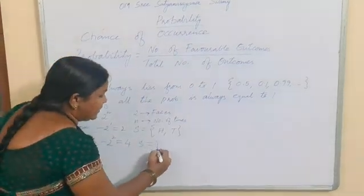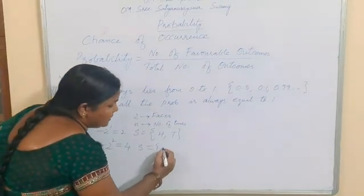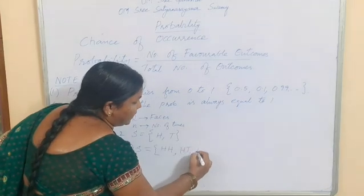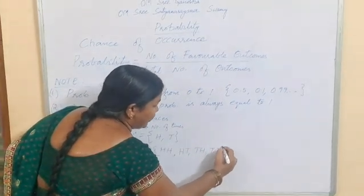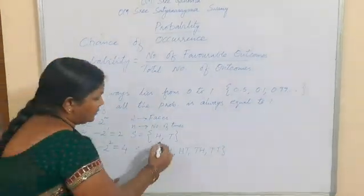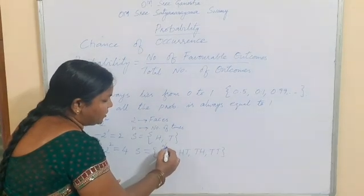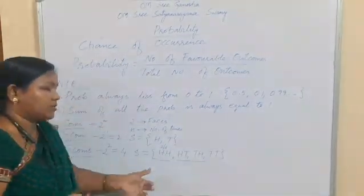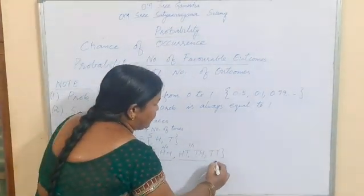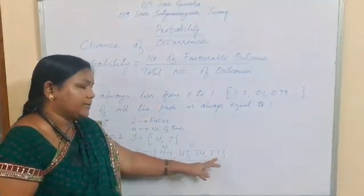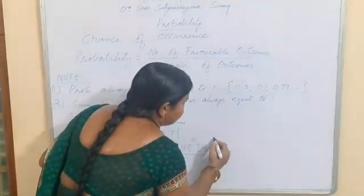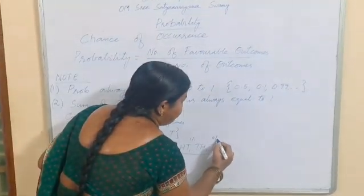So when tossing 2 coins, the sample space S consists of: Head Head, Head Tail, Tail Head, and Tail Tail. The first outcome consists of 2 heads and 0 tails. The middle two outcomes consist of 1 head and 1 tail. The last outcome consists of 0 heads and 2 tails.